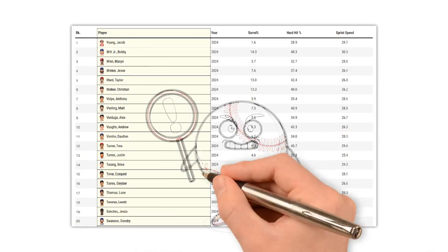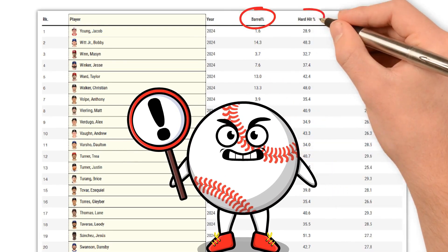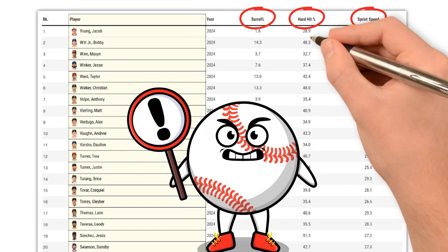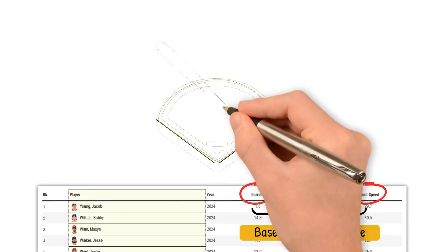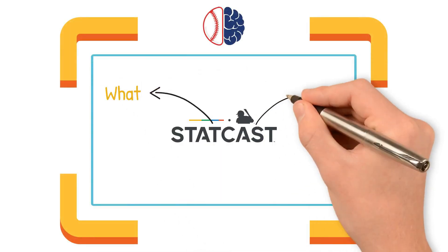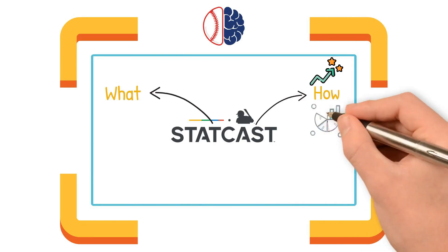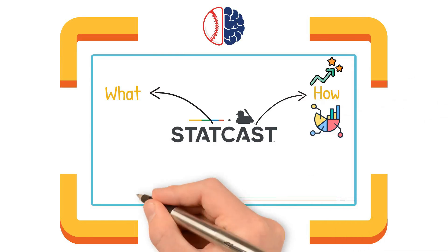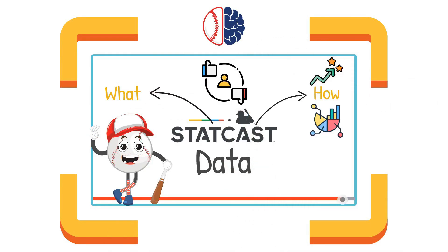But with all of these numbers, it's easy to get lost. What do terms like barrel percentage, hard hit percentage, and sprint speed actually mean in regards to baseball performance? And more importantly, how can we apply them? In this video, we'll break down what StatCast is, how it has evolved over time, and how to interpret its most important metrics. By the end, you'll know exactly how to use StatCast data to evaluate players like a pro.